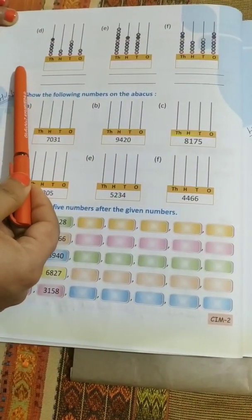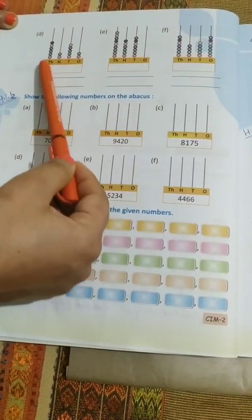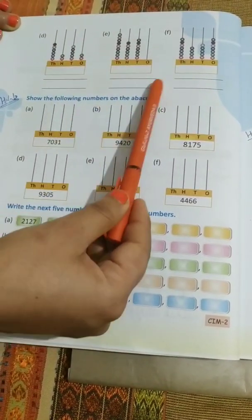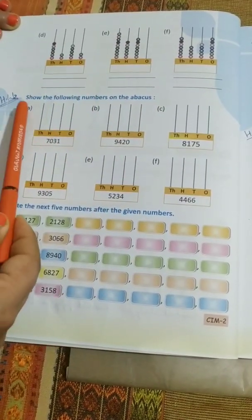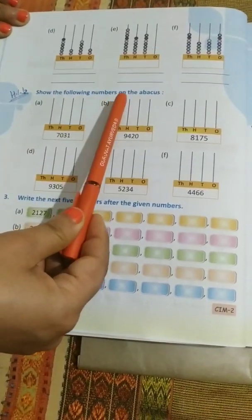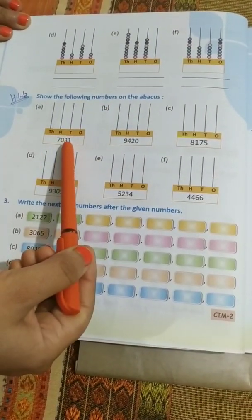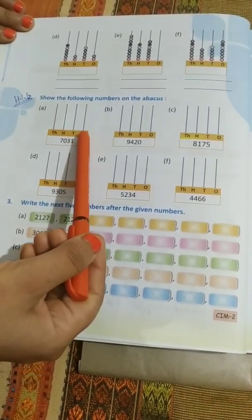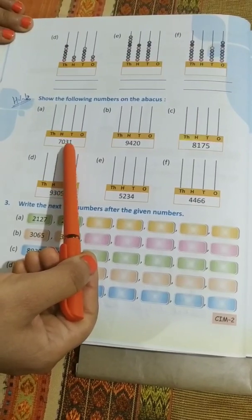Question 1 Part D, E and F, these three parts you have to do yourself on the book. Question 2: Show the following numbers on the abacus. In this question, number is given to you, you just have to draw the beads according to the place. Like in this first part,